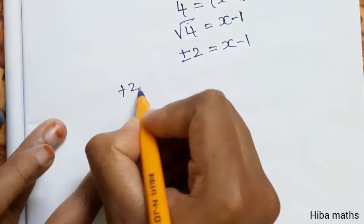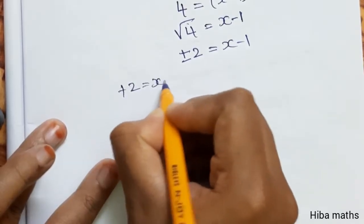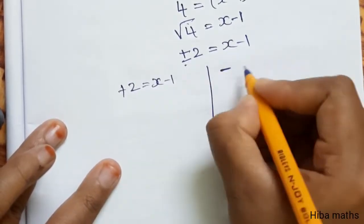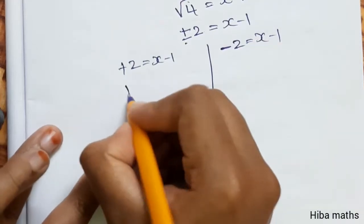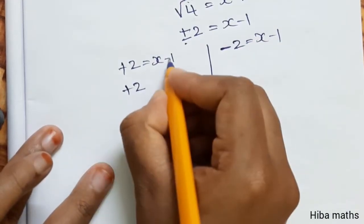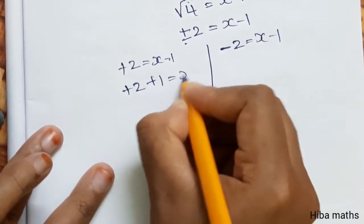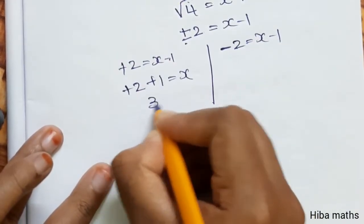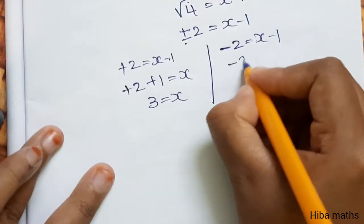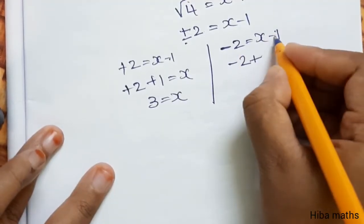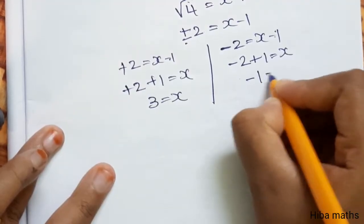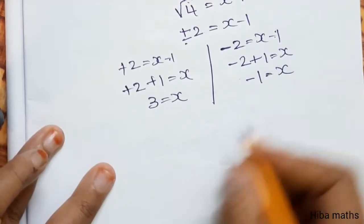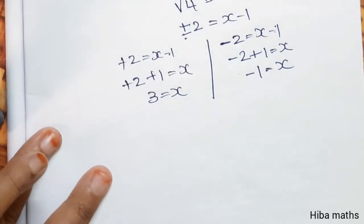One result: plus 2 equals x minus 1, so x equals 3. The other result: minus 2 equals x minus 1, so x equals minus 1. We now substitute these x values back into the curve equation to find the corresponding y values.